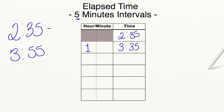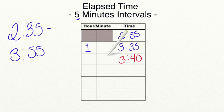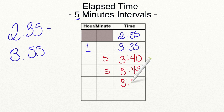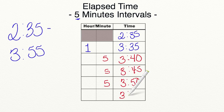Starting our five-minute intervals: 3:35 to 3:40 is 5 minutes, 3:40 to 3:45 is another 5 minutes, 3:45 to 3:50 is another 5 minutes, and 3:50 to 3:55 is another 5 minutes — we've reached our end time. Now our last step, just like with a number line, is to add all of these together.